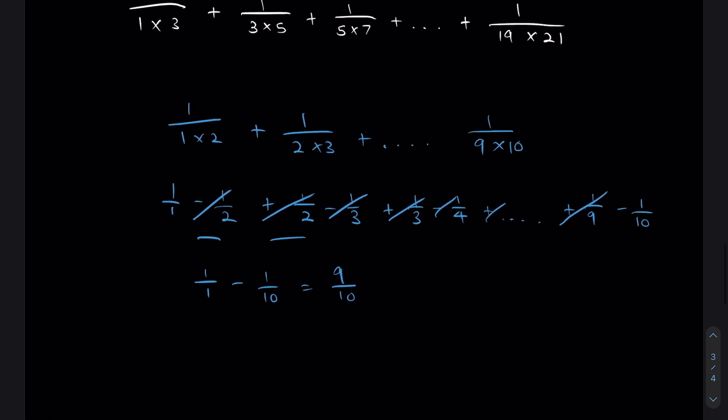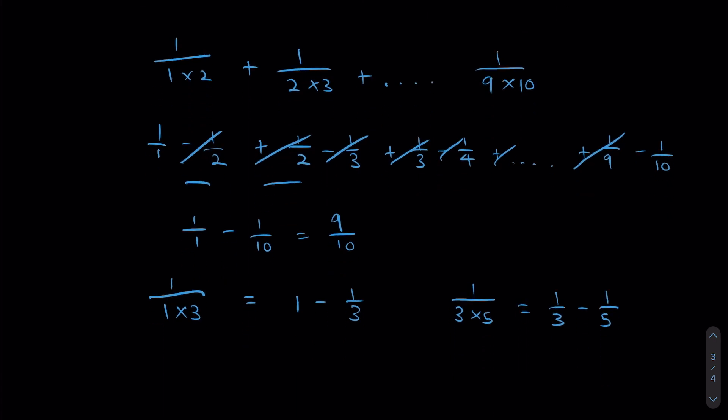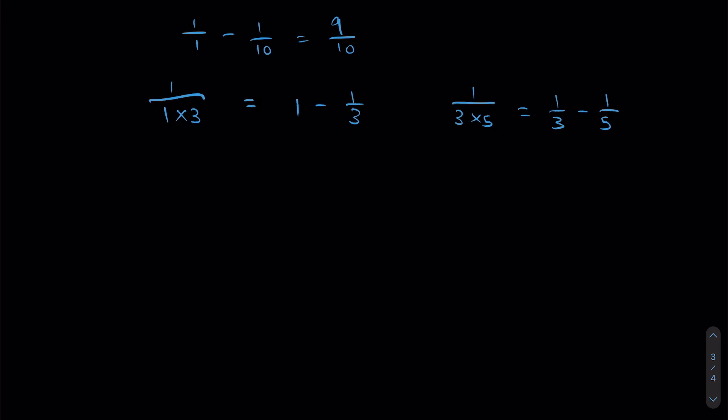So similarly, I'm going to split 1 over 1 times 3 into 1 minus 1 over 3. I'm going to split 1 over 3 times 5 into 1 over 3 minus 1 over 5. And if we do the whole thing together, let's see what that looks like.